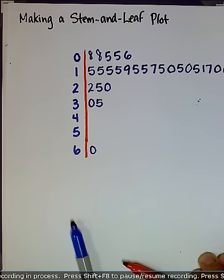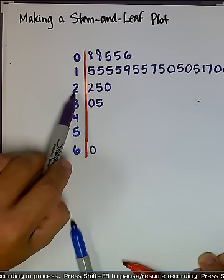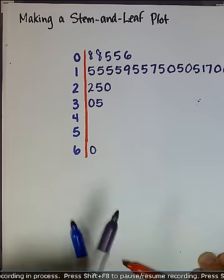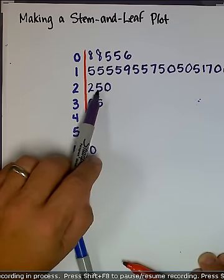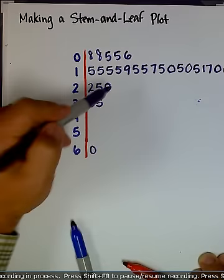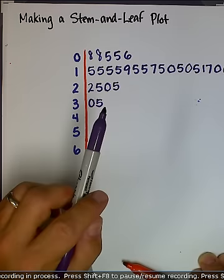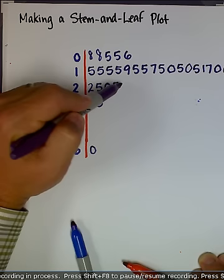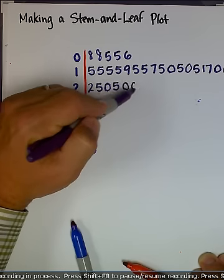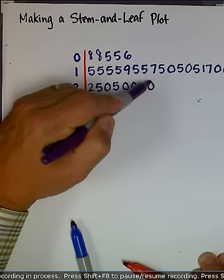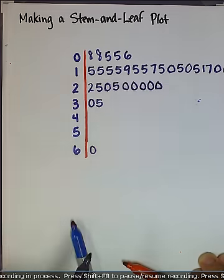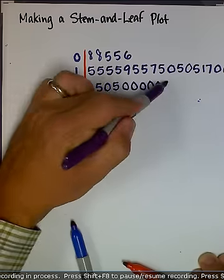Now to my 20s in my stem. I already have 22, 25, and 20. I need another 25. I have 1, 2, 3, 4, 5 more 20s. And then I have a value of 21.